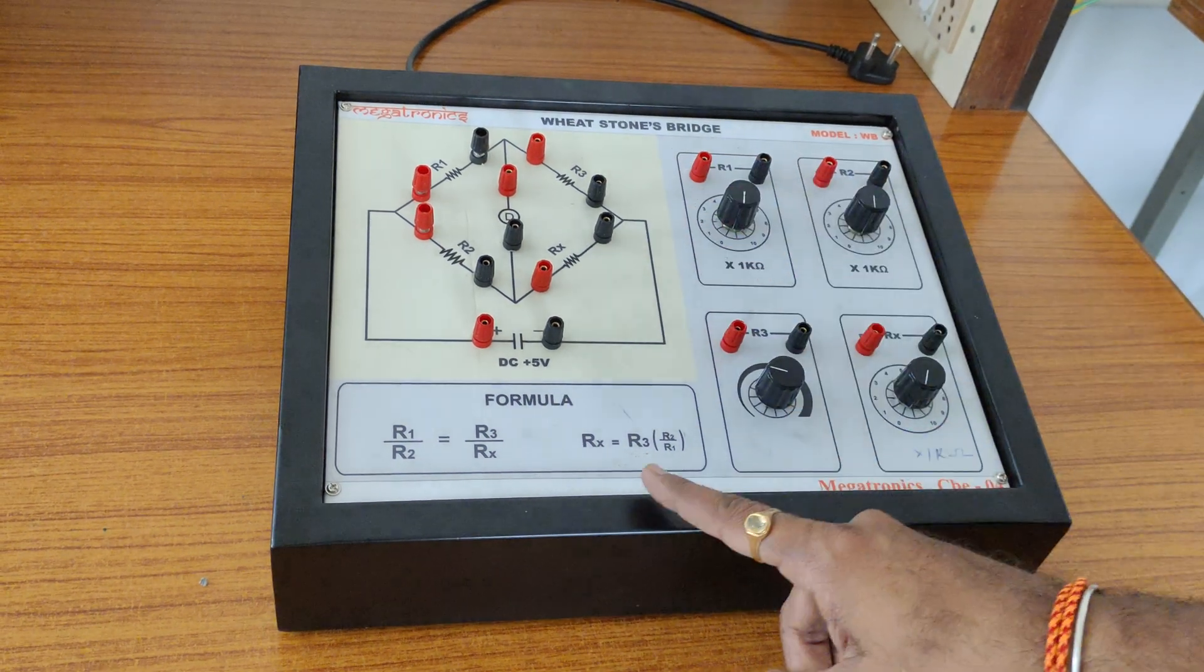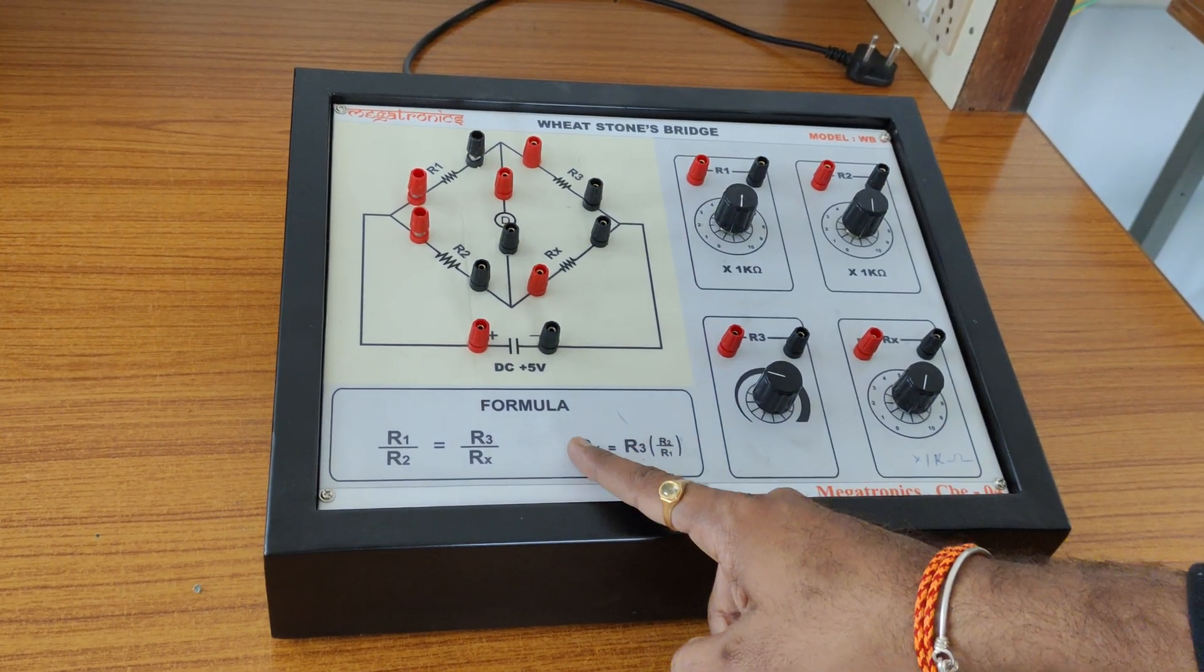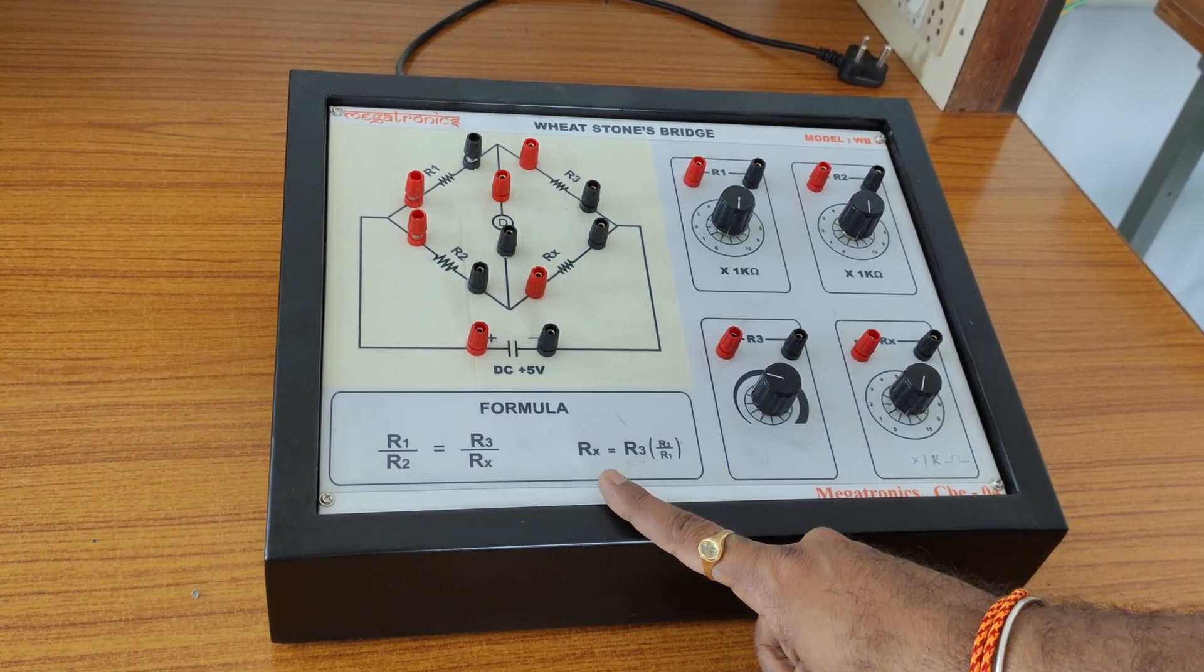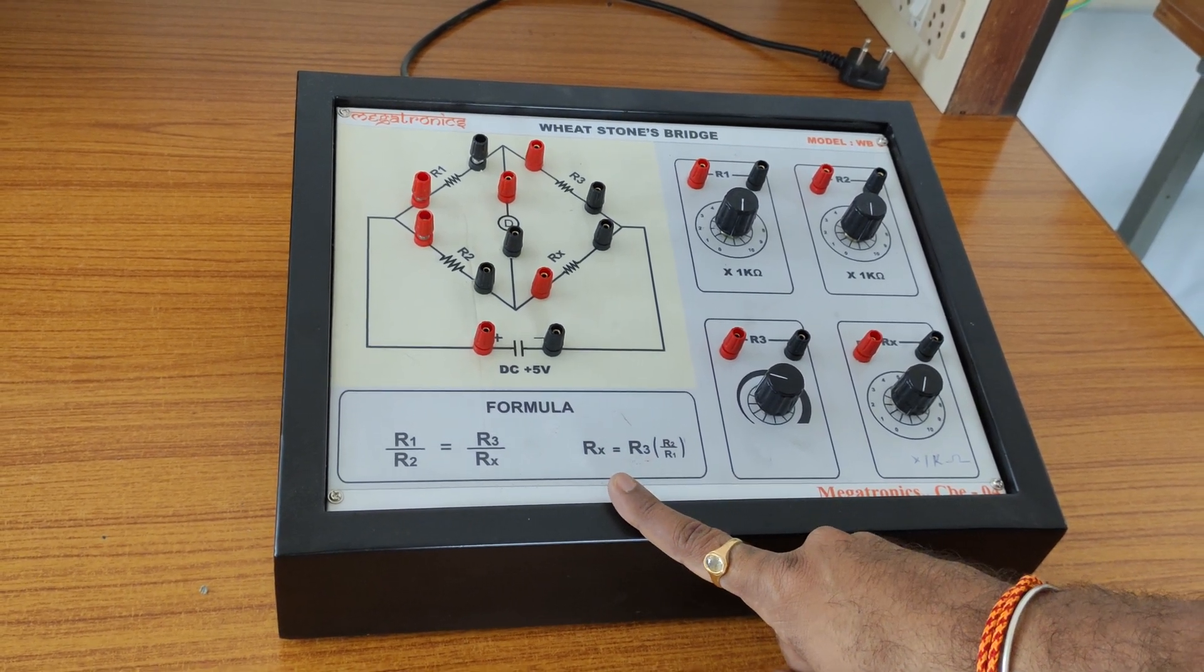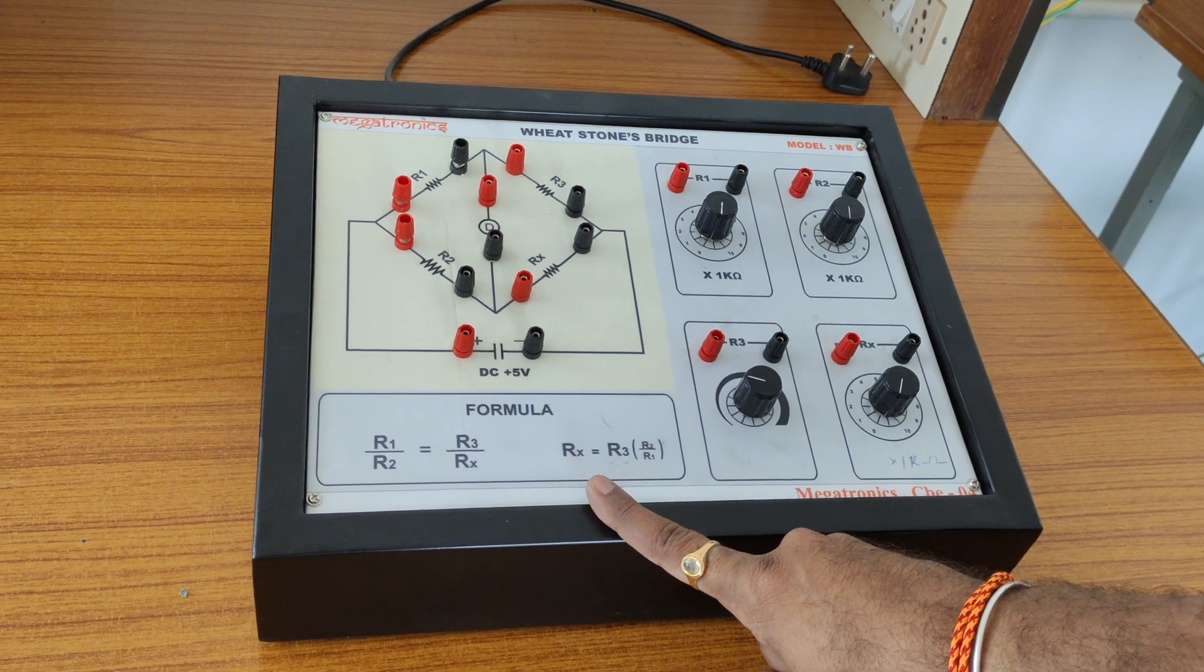From that we calculate the value of Rx. This Rx is nothing but unknown resistance we have to calculate. Medium range resistance is in between 1 ohm to few mega ohms.